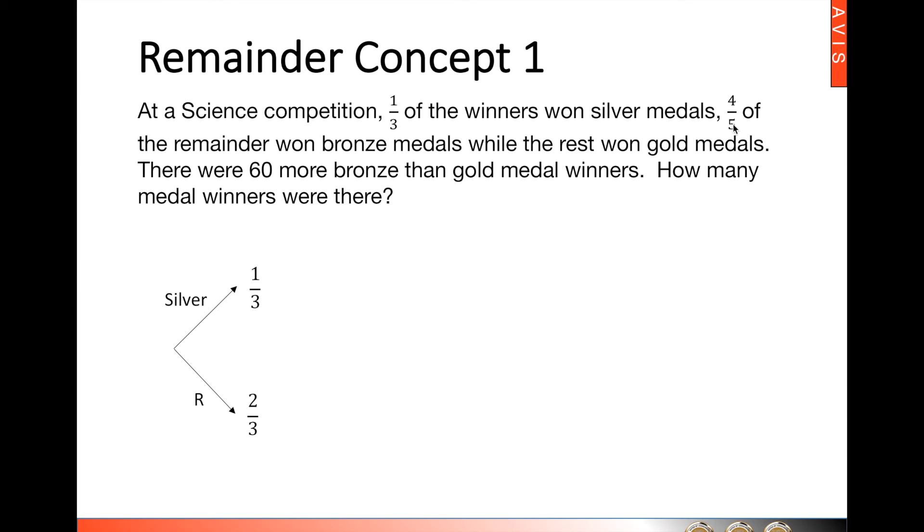Now from here we can see the next sentence: four fifths of the remainder won bronze medals. So we need to branch out from the remainder of which four fifths are bronze medal winners. So we can see from here that we have four fifths bronze. Now the rest won gold medals. So the rest here would be one fifth, again stemming from what we have learnt just previously that every branch must add up to be one whole.